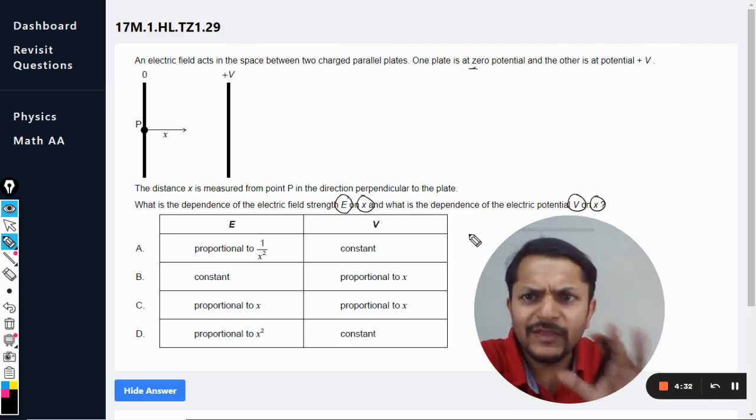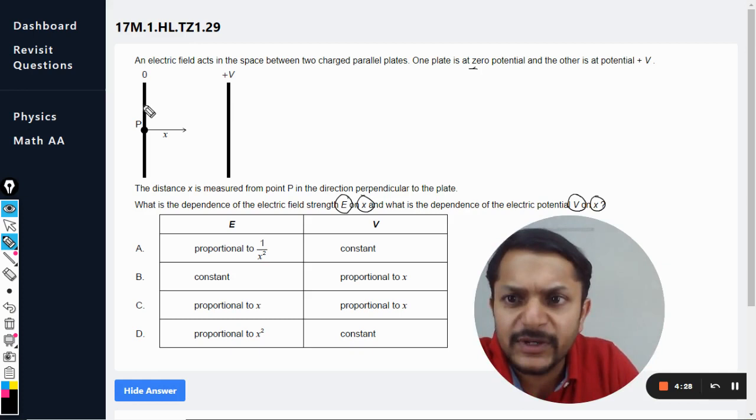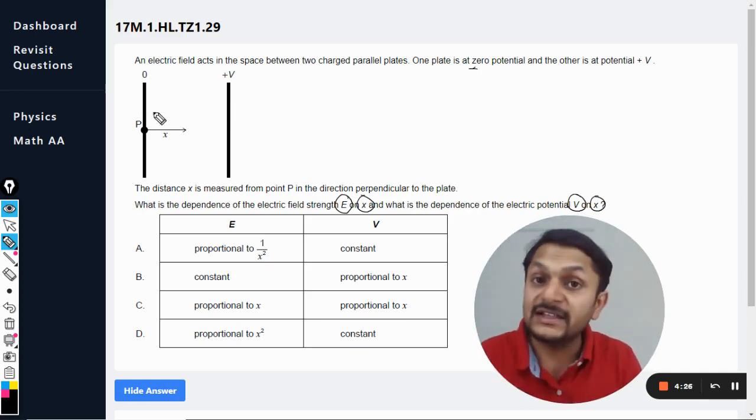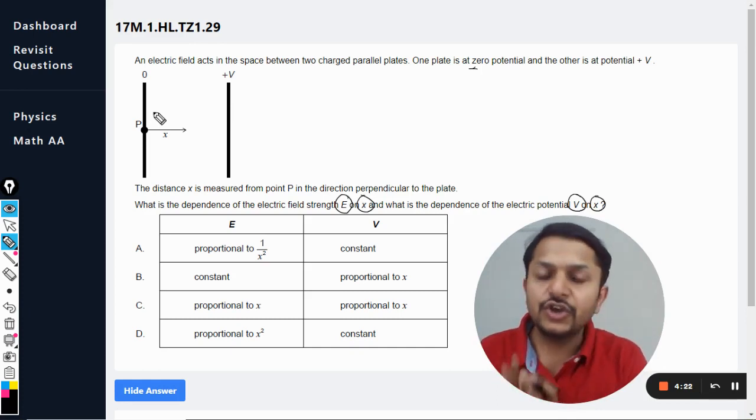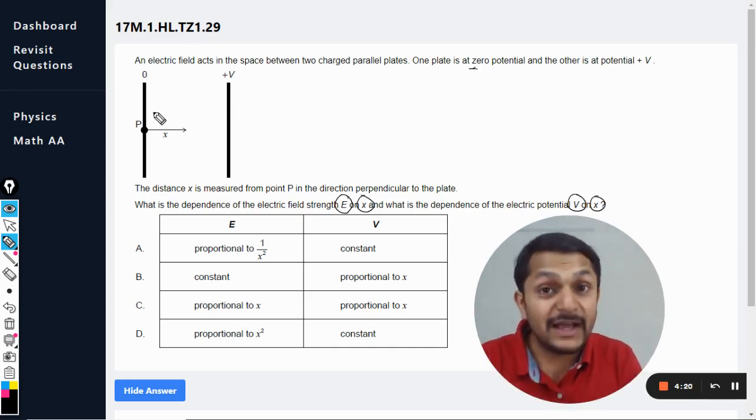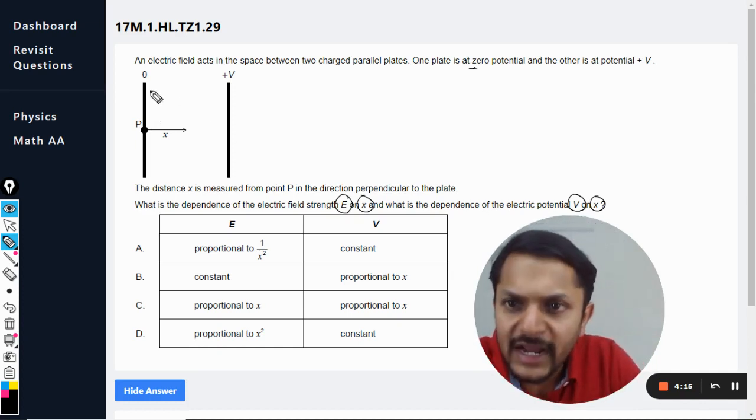So one thing is sure now: this plate is at positive potential, this plate is at zero potential, or we can say comparatively it is at negative potential. So the electric field will exist within the space and it would be directed from the positive side to the negative side, no doubt about that.